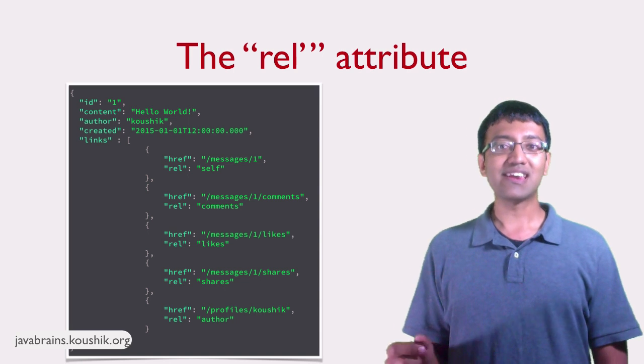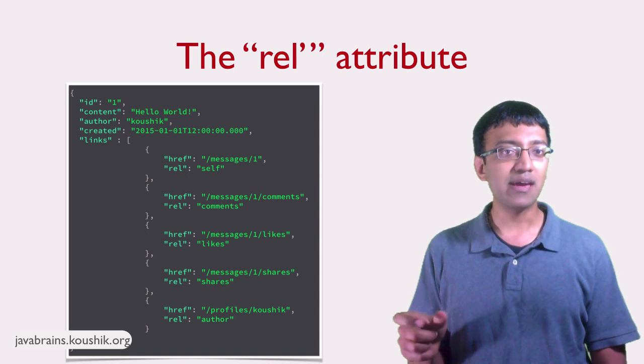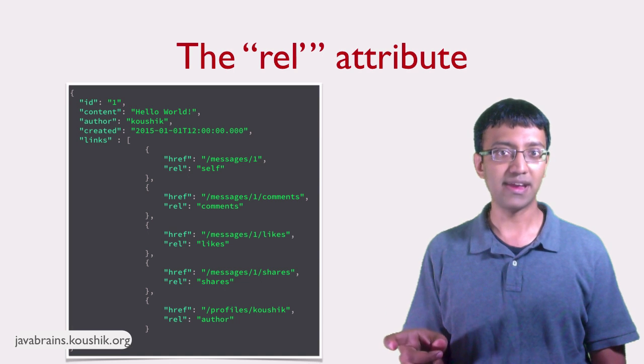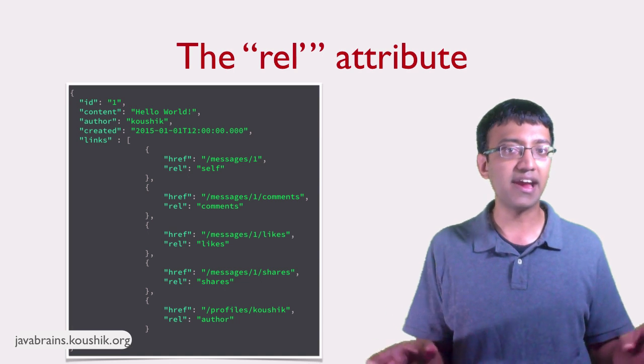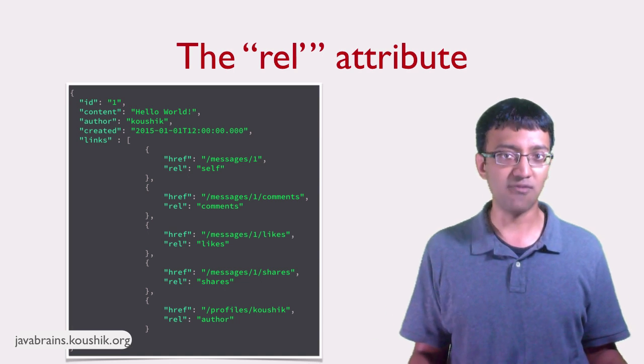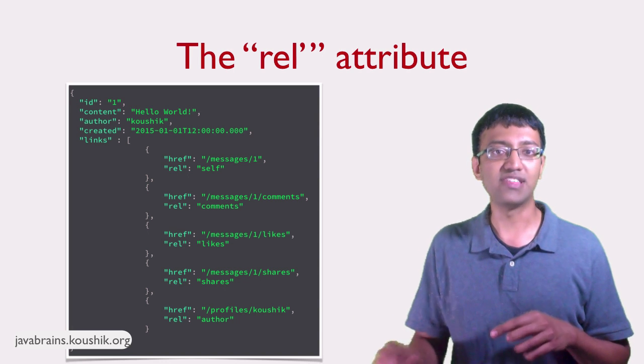If you do this, now the client doesn't have to remember the link property name, right? They just have to find the link with the right rel value for the resource that they want. And then they just look up the href for that link.